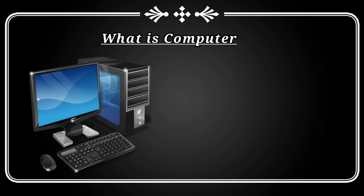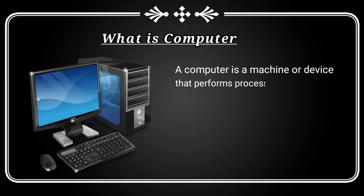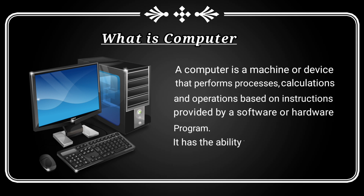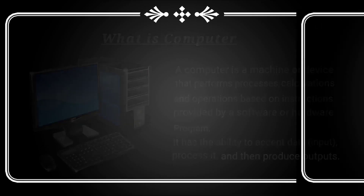What is a computer? A computer is a machine or device that performs processes, calculations and operations based on instructions provided by a software or hardware program. It has the ability to accept data as input, process it, and then produce outputs.